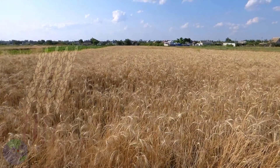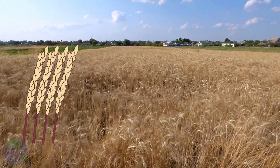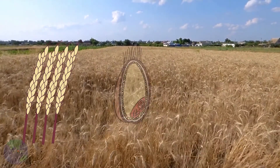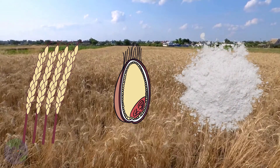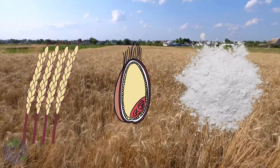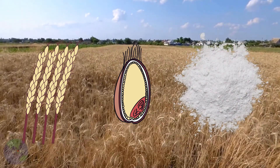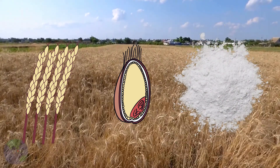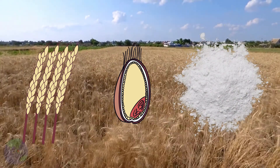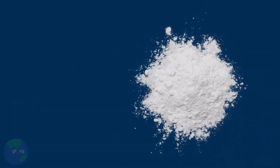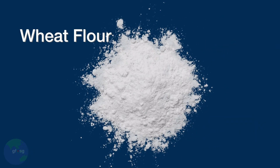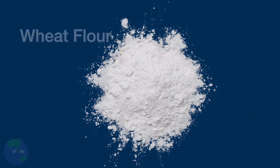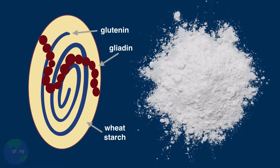At the top of each stalk of wheat are a cluster of seeds. The seeds are harvested and commonly made into flour. Gluten is the protein that is inside the seeds of wheat, rye, and barley. If you could look into the tiny bits of flour, you would find strands of gluten protein tightly wrapped around the molecules of starch.